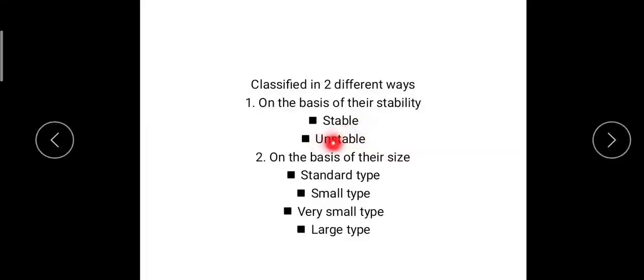The unstable type is the exact opposite. Here the B chromosomes are mitotically unstable, giving rise to cells with different numbers of B chromosomes within the same individual. That is, the parent cell divides to form two daughter cells, and those two daughter cells will have different numbers of B chromosomes. This type is called unstable.